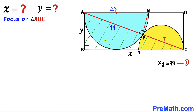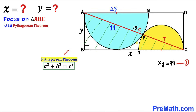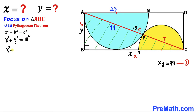Now let's focus on the big right triangle ABC, whose hypotenuse is 11 plus 7 = 18 units long. Applying the Pythagorean theorem — a² + b² = c² — with the legs as x and y and hypotenuse 18, we get x² + y² = 324. This is equation two.